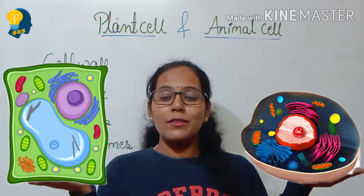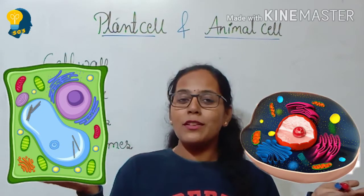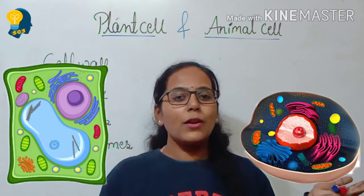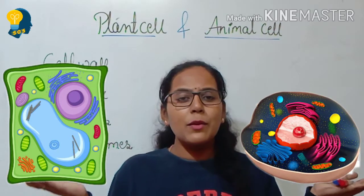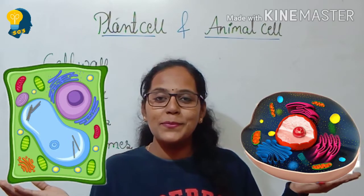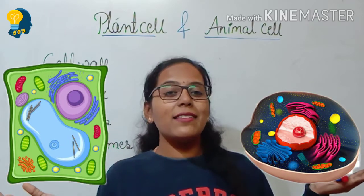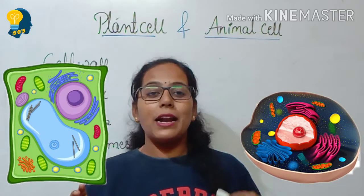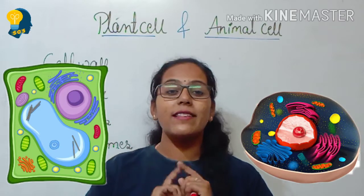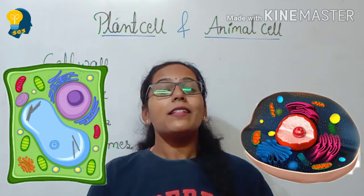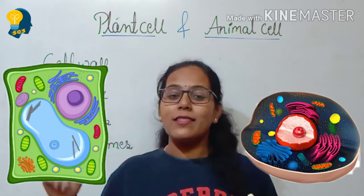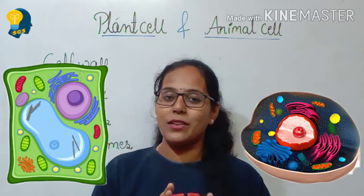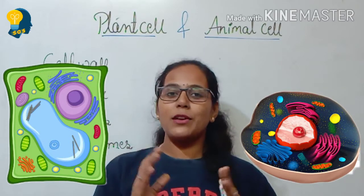Let us find out the first difference between them — it is easy and you can find it out yourselves. Can anybody guess? The first difference is the cell wall. There is presence of cell wall in the plant cell, but in the animal cell the cell wall is absent. This is the first difference.